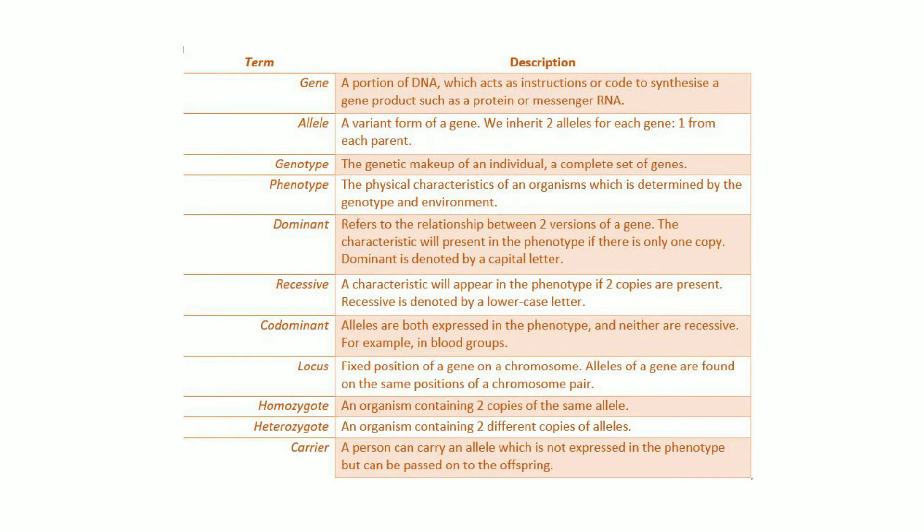Homozygote is an organism containing two copies of the same allele. Heterozygote is an organism containing two different copies of alleles. And carrier: a person can carry an allele which is not expressed in the phenotype but can be passed on to the offspring.